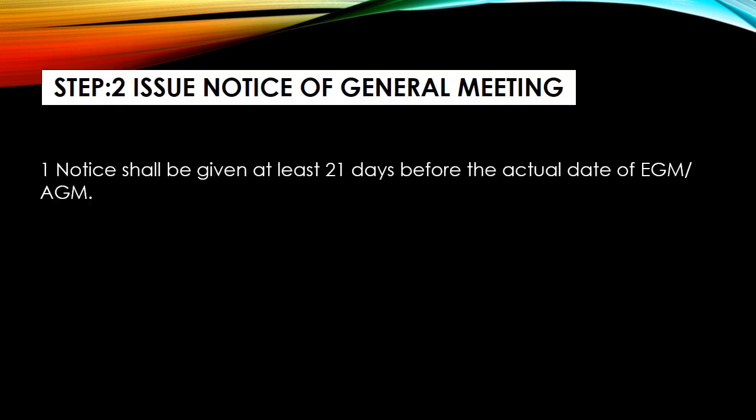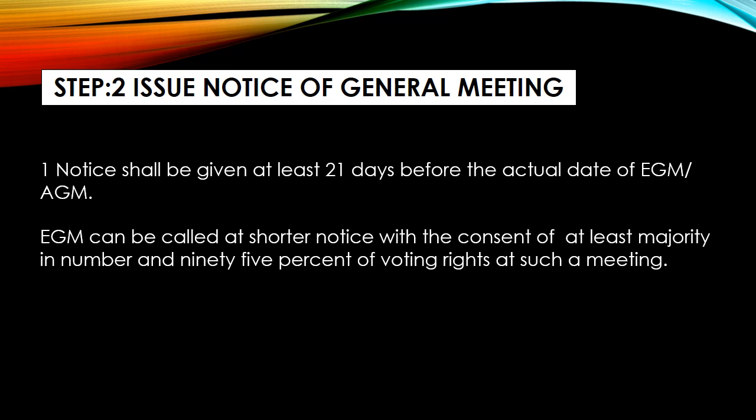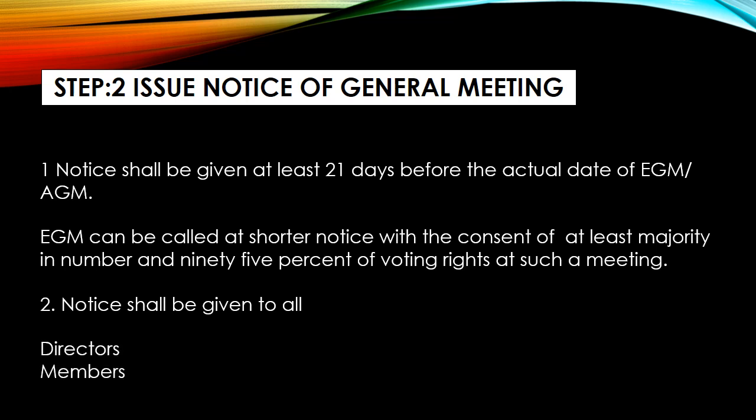Next step is to issue the notice of general meeting. Notice issue किया जाएगा general meeting का — general meeting चाहे EGM हो सकती है, या AGM अगर उस time पे होने वाली है. At least 21 days पहले आपको notice issue करना होता है, shorter notice भी आप issue कर सकते हैं अगर आपके पास members की consent हो — 95% of the voting rights वाले members की consent होनी चाहिए for the shorter notice. Notice issue किया जाएगा to all the directors, members and the auditors of the company.